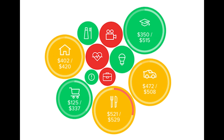Green indicates you are below 80% of your limit. Yellow indicates you are between 80% to 100% of your limit, and red means you are over your limit.